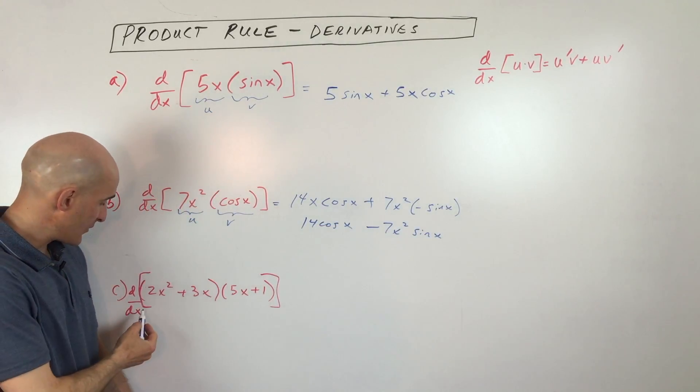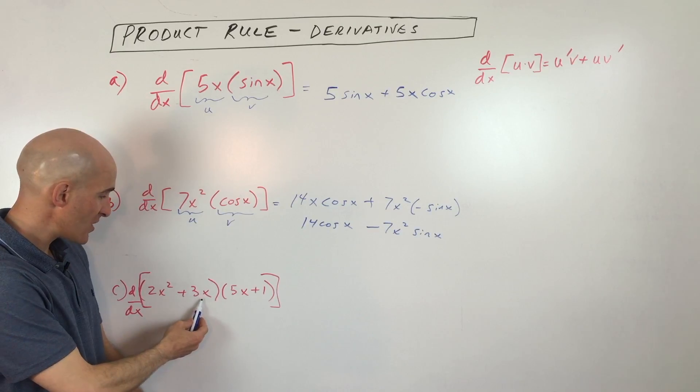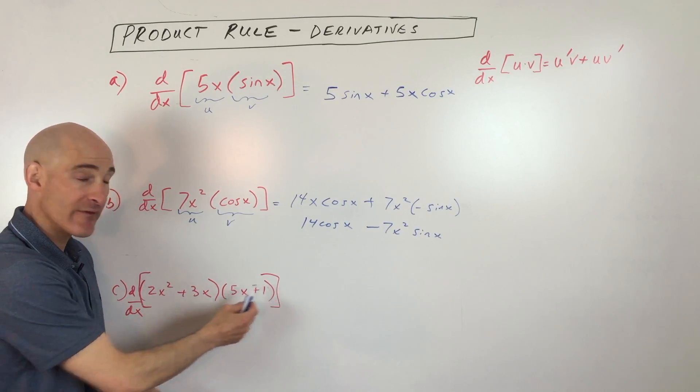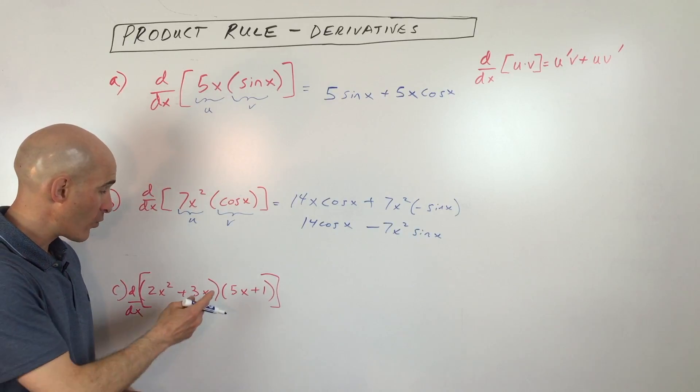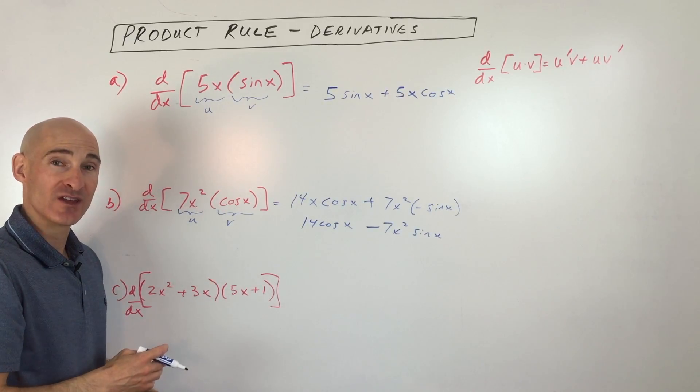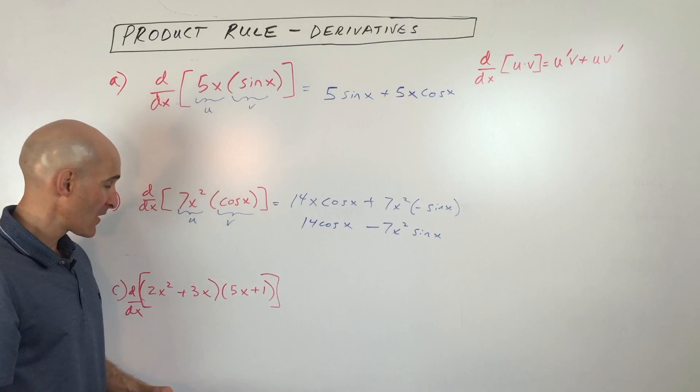Last example, we've got the derivative of 2x squared plus 3x, that quantity, times 5x plus 1. Now you're probably thinking to yourself, Mario, can't I just foil that out and then just do the power rule? Well, you can.